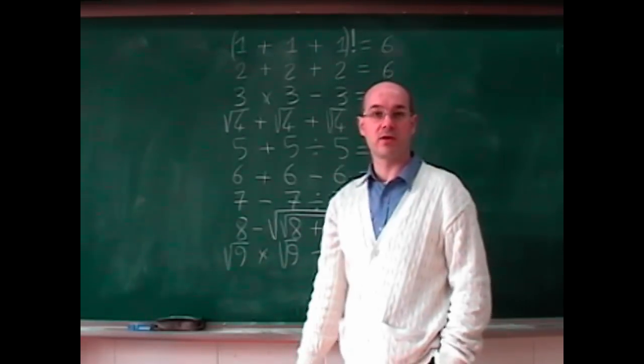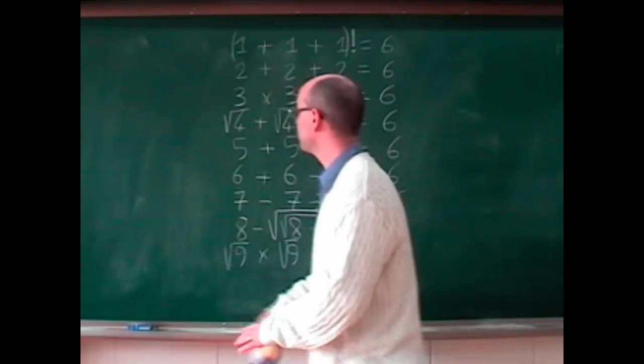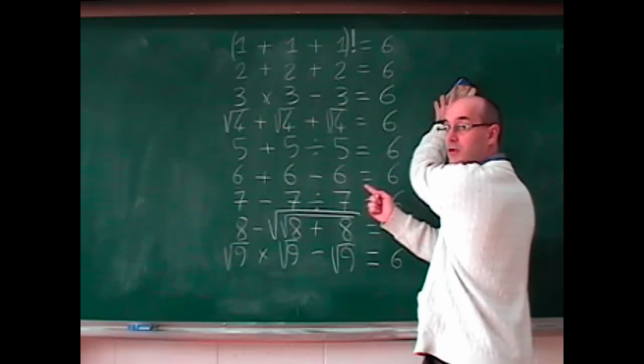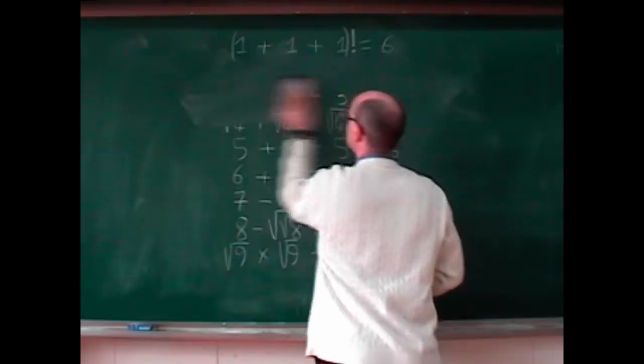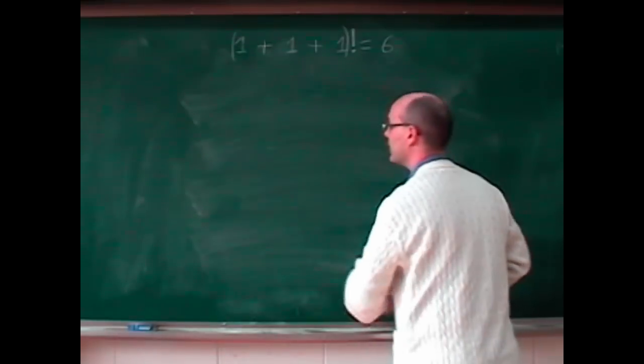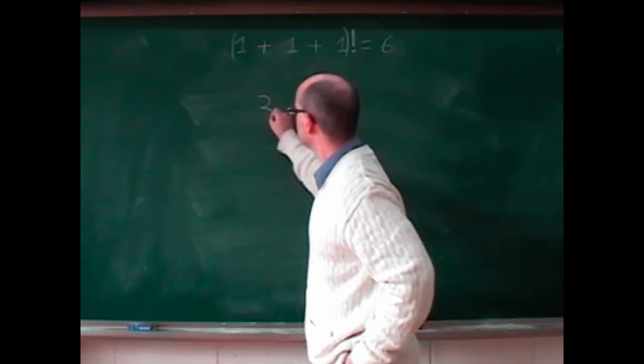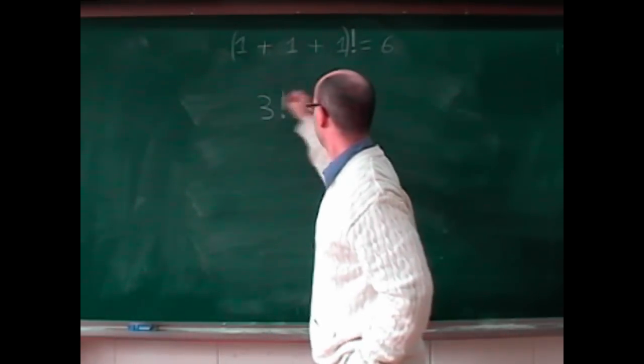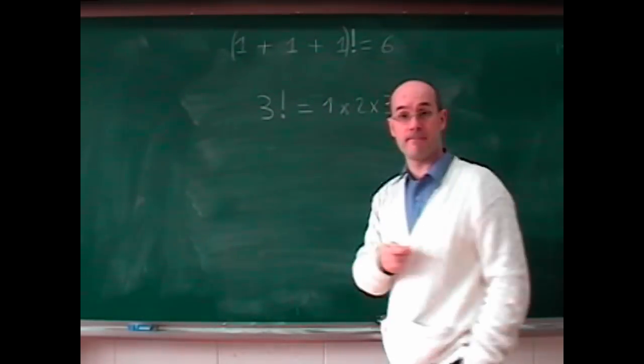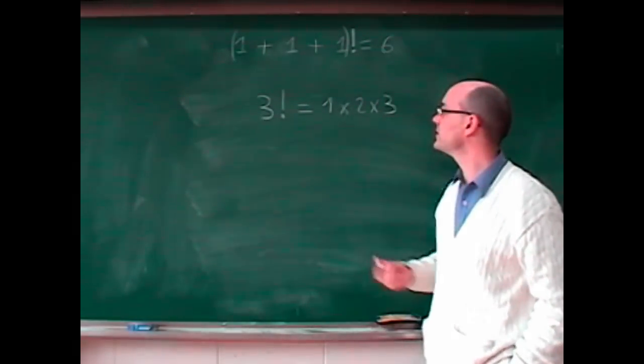This is called the factorial. This is how it works. You got this? Okay. Factorial. It works like this. Factorial 3 is 1 multiplied by 2 multiplied by 3 makes 6.